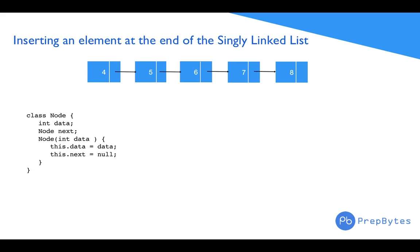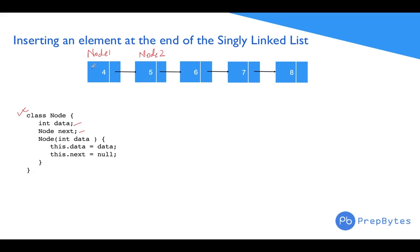Now let's see how to insert an element at the end of the linked list. We have our Node class which has two items: data, which will contain the data we want to store, and next, which stores the reference to the next object. So node one's next points to node two. We also have a constructor to initialize newly created objects, and a head variable that points to the first node of the linked list.